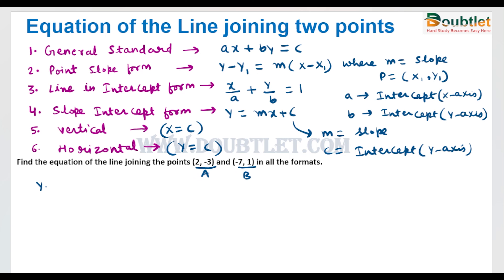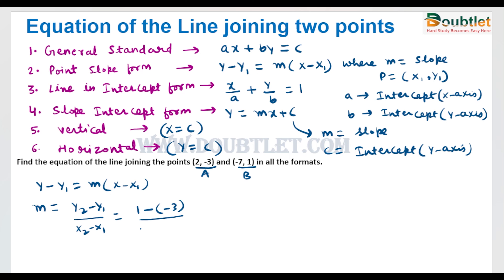We will find the equation using y minus y1 equals m times x minus x1. The slope m is found from the previous video's formula: m equals (y2 minus y1) divided by (x2 minus x1). So m equals (1 minus (minus 3)) divided by (minus 7 minus 2), which gives minus 4 divided by 9. This is the slope of the line.